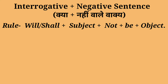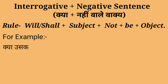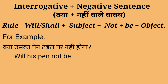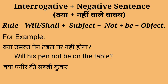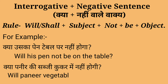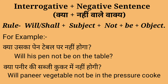In last there is interrogative plus negative sentence — arthat 'kya' plus 'nahi' wale vaakya. For making this we use: Will/shall + subject + not + be + object. For example: Kya uska pen table par nahi hoga — Will his pen not be on the table? Kya paneer ki sabji cooker mein nahi hogi — Will paneer vegetable not be in the pressure cooker?